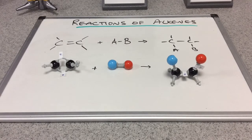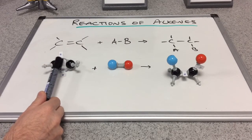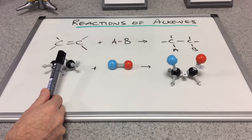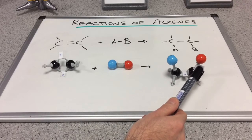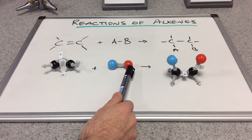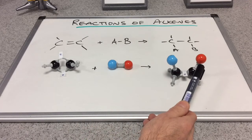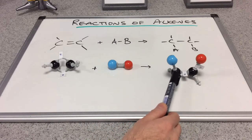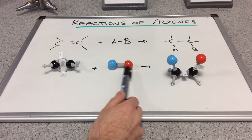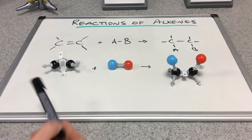You can see what's happened in the models. We've got this pi pair of electrons—it's broken, and there it is. That's enabled us to attach the B part of the AB molecule. That would obviously leave space on this carbon atom for the remainder of the AB molecule to form a covalent bond there.